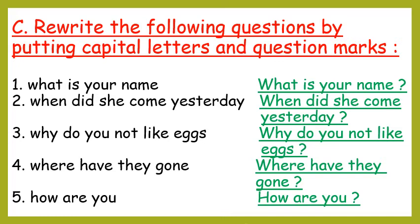Third: Why do you not like eggs? — W of 'why' will be in capital: Why do you not like eggs, question mark. Fourth: Where have they gone? — W of 'where' is the first letter: Where have they gone, question mark. Fifth: How are you? — H of 'how' will be in capital: How are you, question mark.